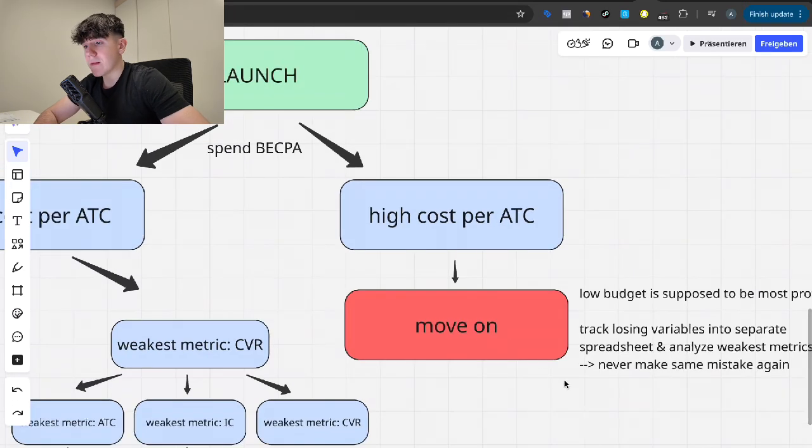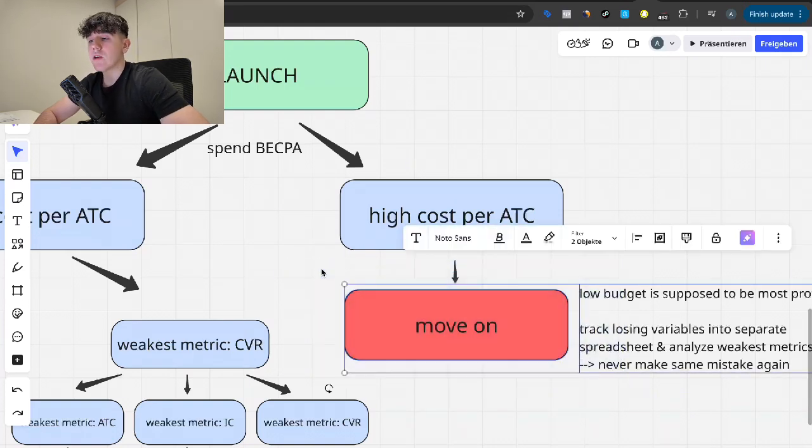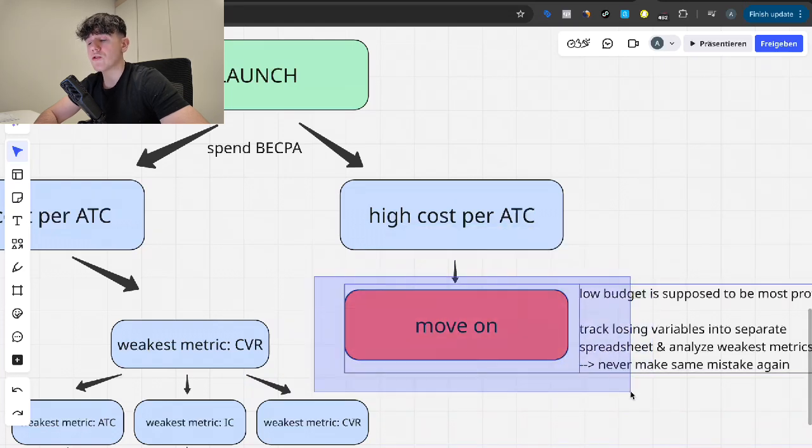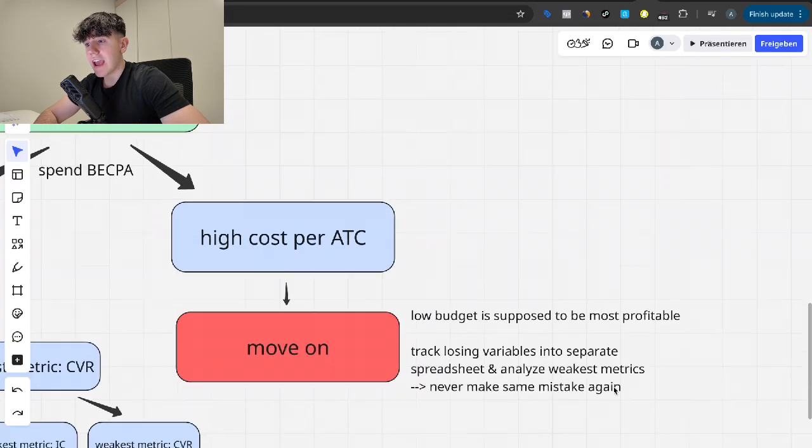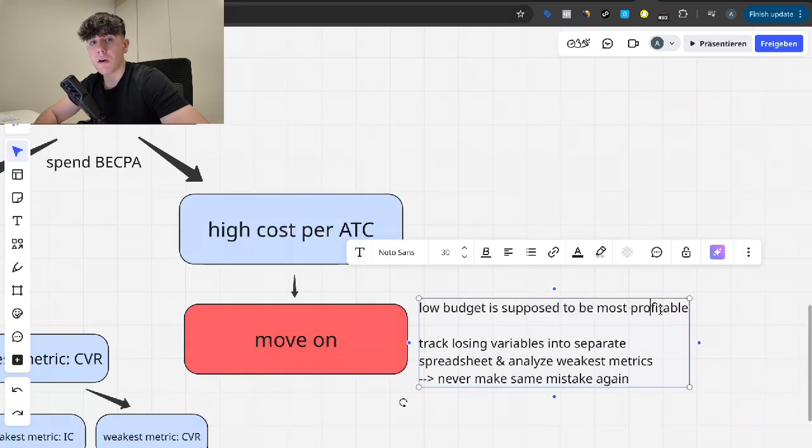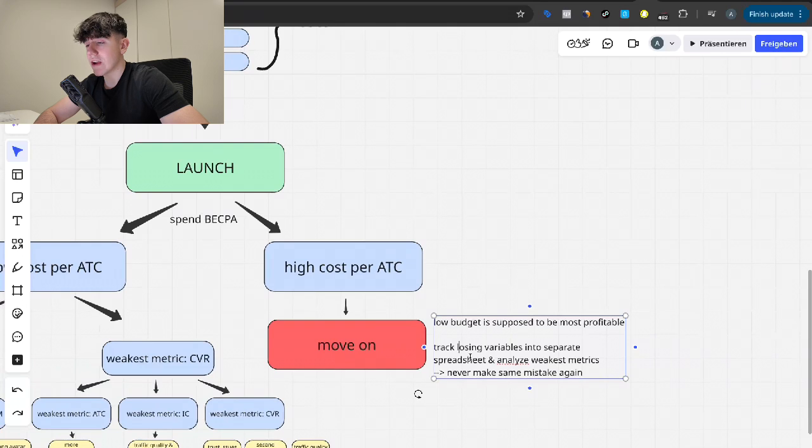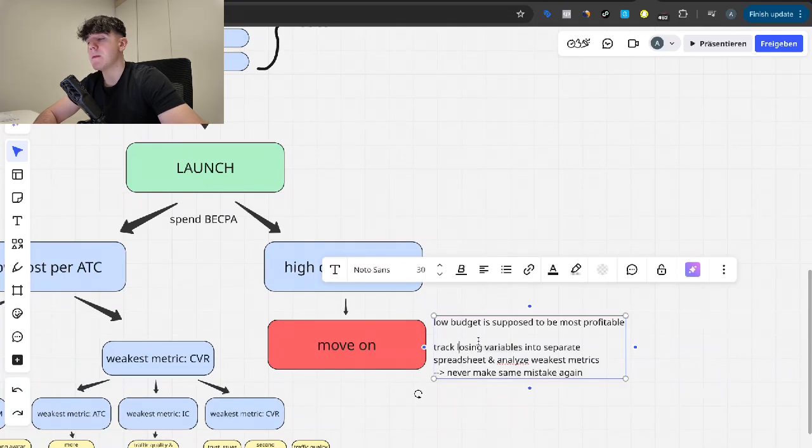So what you do then is any ad concept, any ad specifically, any creative that has a high cost per add to cart, high meaning it's higher than a third of your ideal cost per purchase, you just move on. We don't want to iterate bad ads. This is a big misconception. People look at the worst ad and then they iterate it. No, you can't iterate your way out of a bad ad. You can't double or triple or quadruple the performance of a terrible ad. You just want to move on.